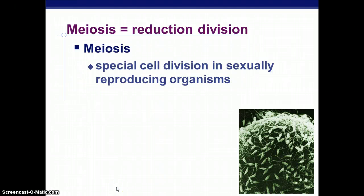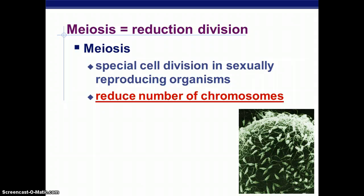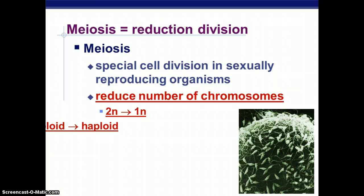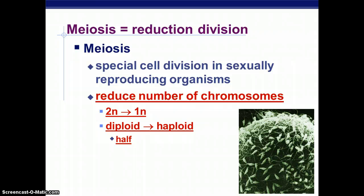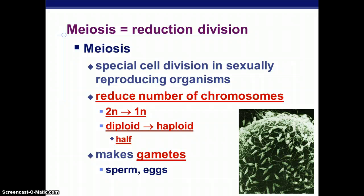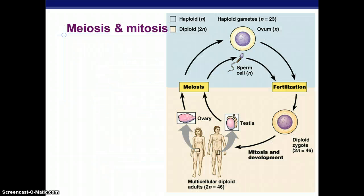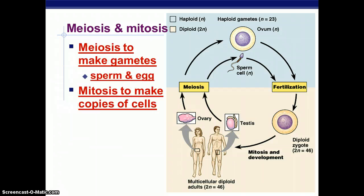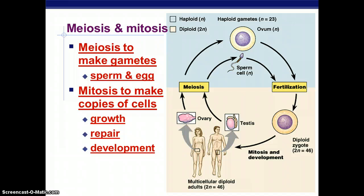So meiosis is the special cell division in sexually reproducing organisms that reduces the number of chromosomes from 2N to 1N — diploid to haploid — which is halving. This is what makes gametes, which are egg and sperm. Mitosis and meiosis are actually part of a cycle: we use meiosis to make gametes, and then we use mitosis to grow, repair, and develop.